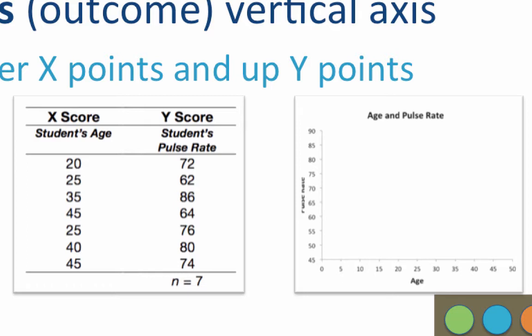We create our first dot by going over 20 points on the x-axis and up 72 on the y-axis. Next, go over 25 and up 62. Over 35 and up 86. Over 45 and up 64. Over 25 and up 76. Over 40 and up 80. Over 45 and up 74. And that is how you create a scatter plot.